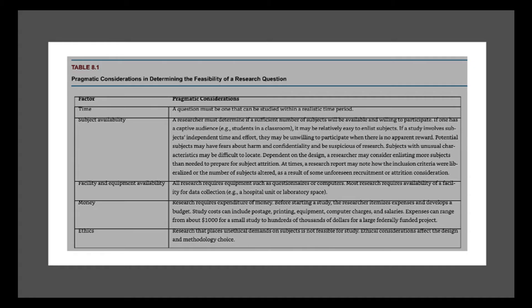Money is a big issue in research. You need to figure out a way to get your work paid for, and you should do this well before you start the study. One of the first things you'll do is create a budget and figure out how much it will cost. Expenses for a study can be minimal — around a thousand dollars — but large randomized control trials can be hundreds of thousands of dollars and run several years. Finally, you must always consider ethics. Research that places unethical demands on subjects is not a feasible study. You have all completed your ethics training and the CITI course, so you should have a good idea of the ethical considerations in doing research.